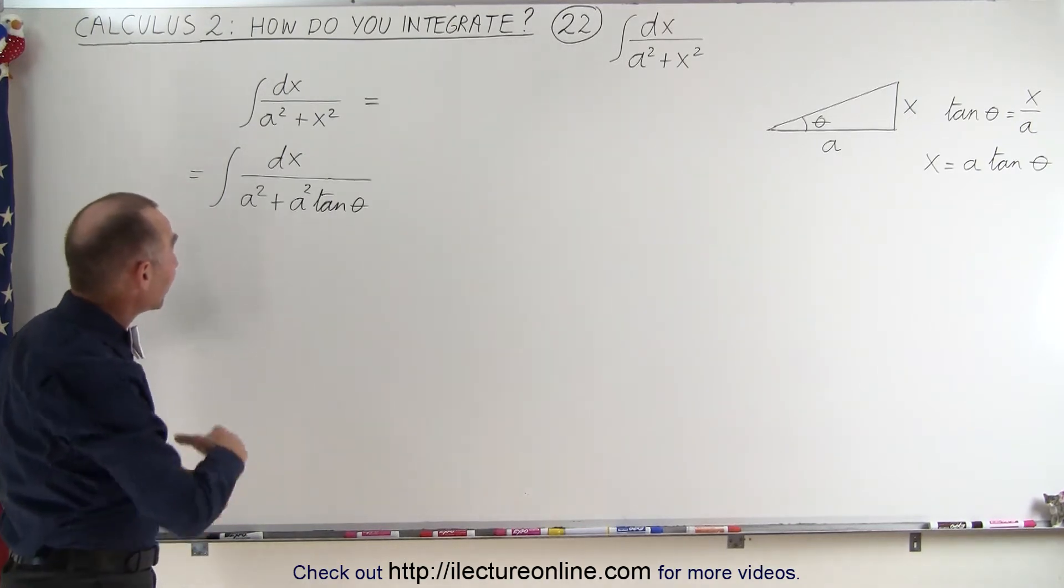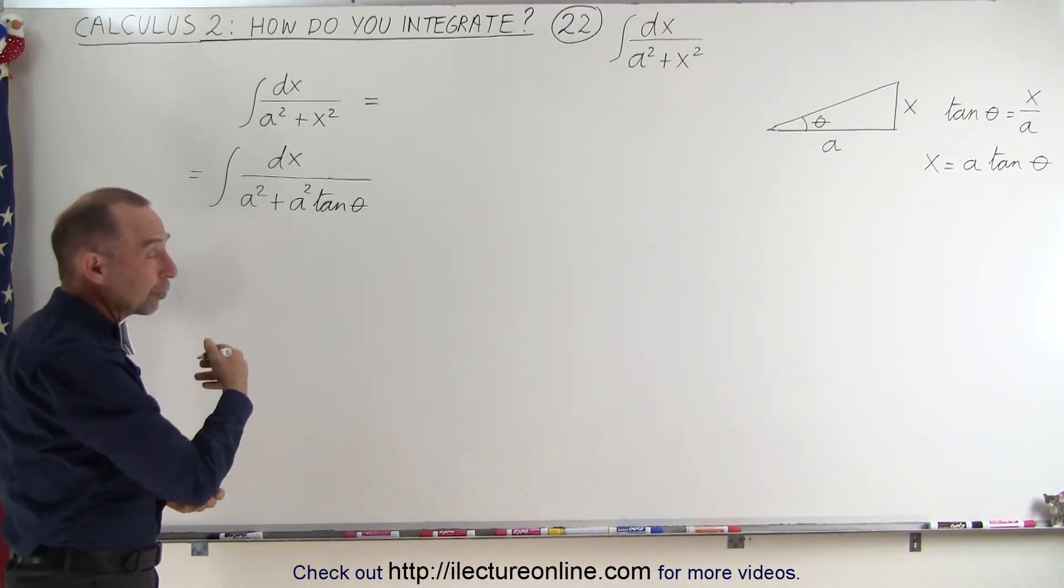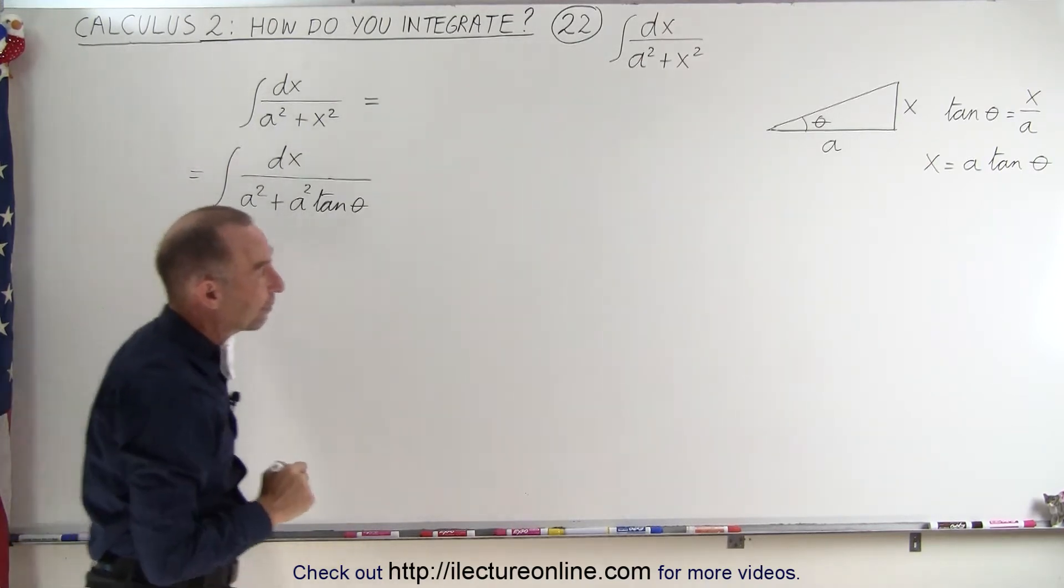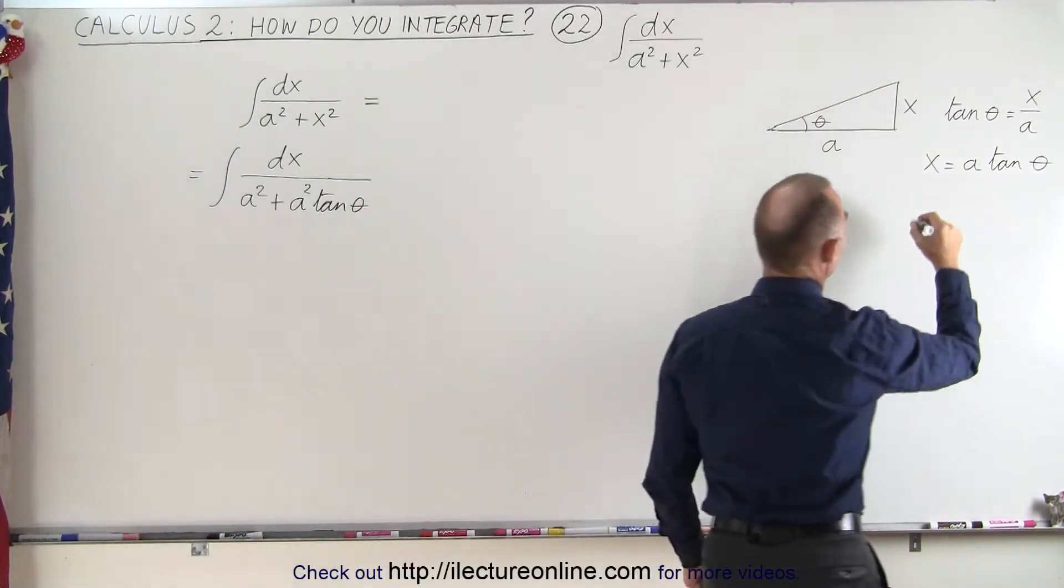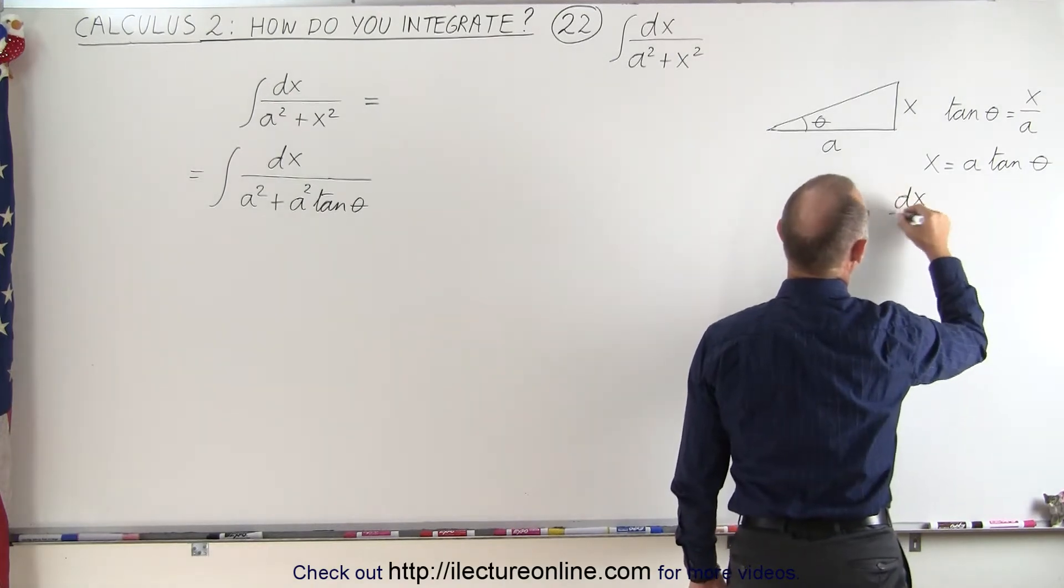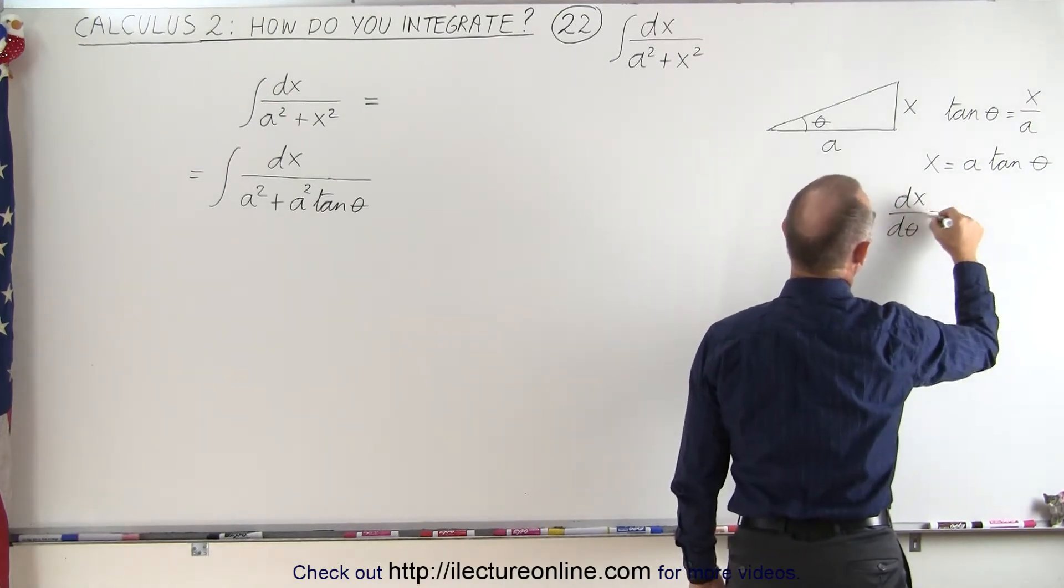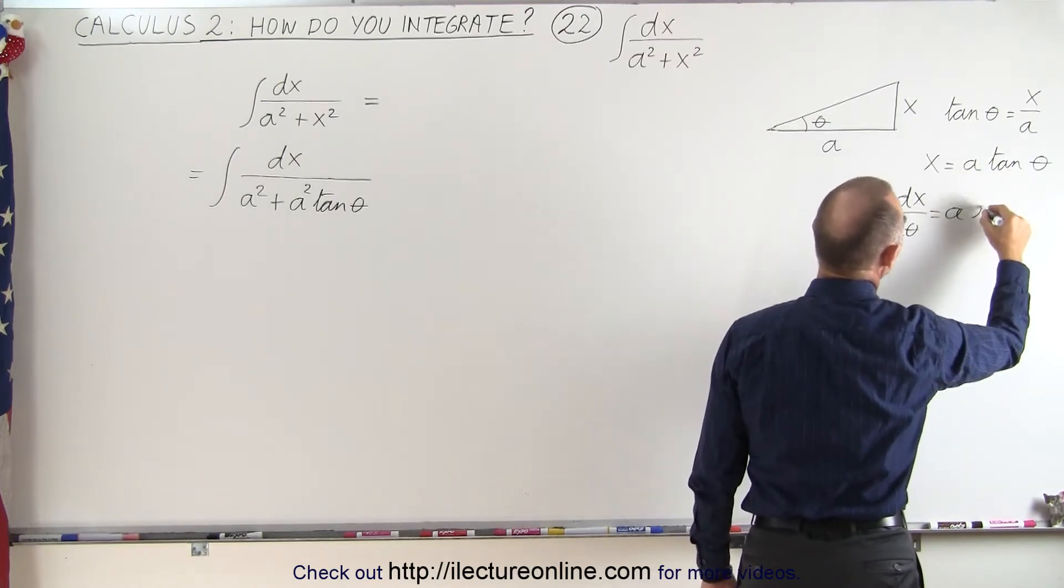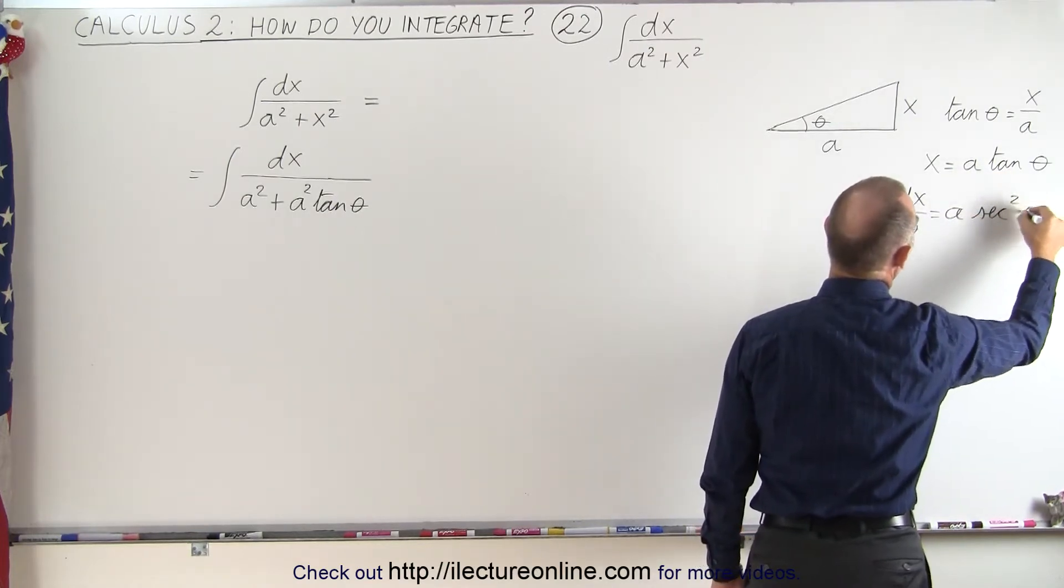Now we have θ in the denominator but an x in the numerator, so we have to also convert dx to something in terms of θ. Which means we're going to have to find the derivative of this. And so we can say that dx/dθ is equal to a times the derivative of tan θ, and that would be equal to a sec²θ.